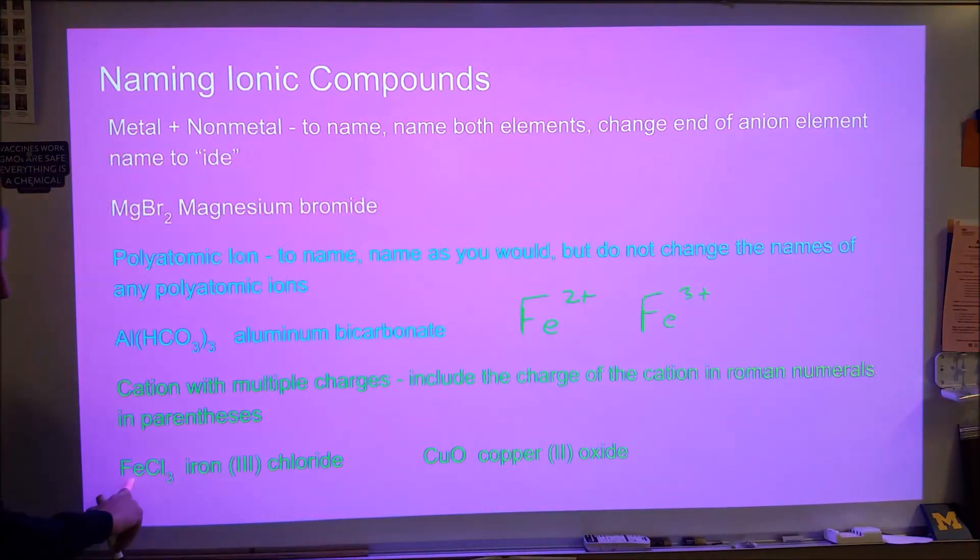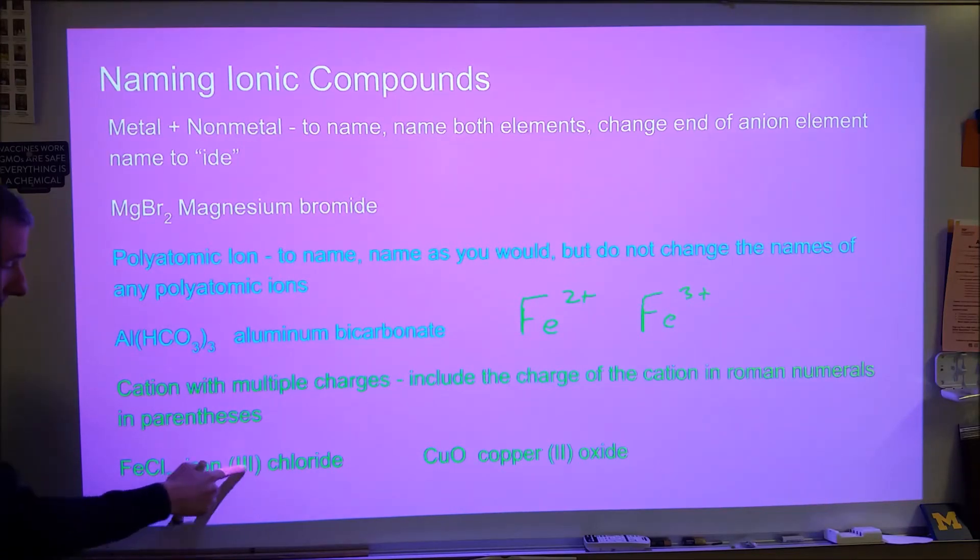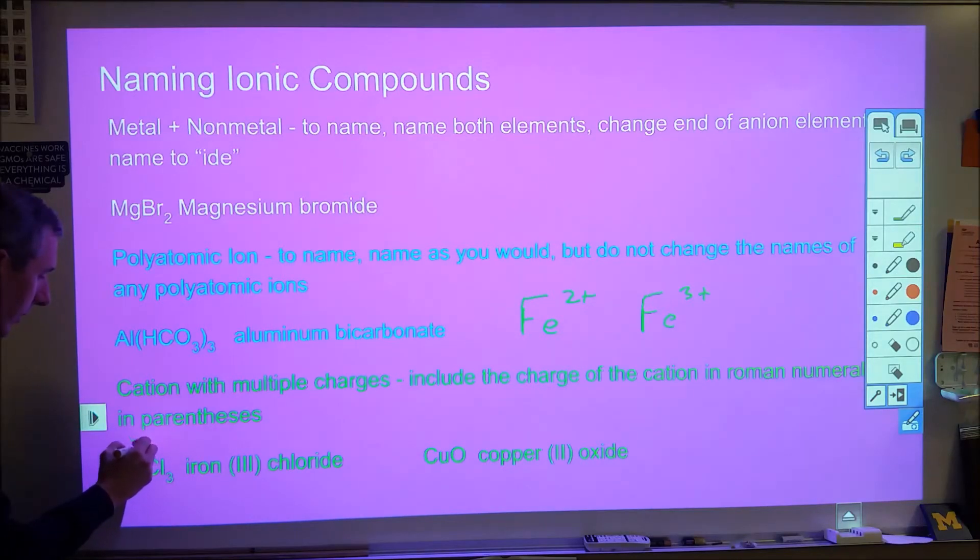So they'll see a compound like this iron chloride and they'll see the three and think the three means this. That's not the case. The three here is telling us that the iron is a 3+ charge which influences what this subscript will be. Now the chloride is a -1 charge so I do need three -1 charges to counterbalance that positive charge.